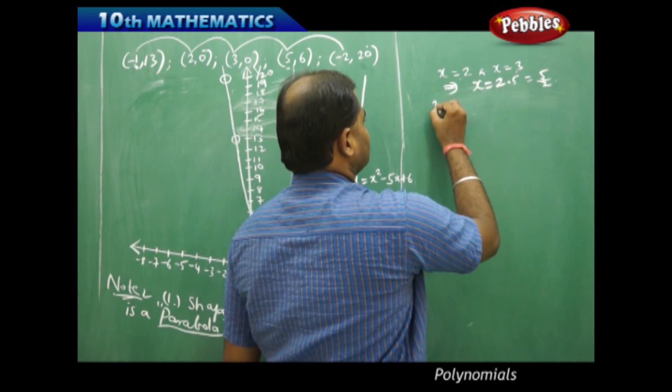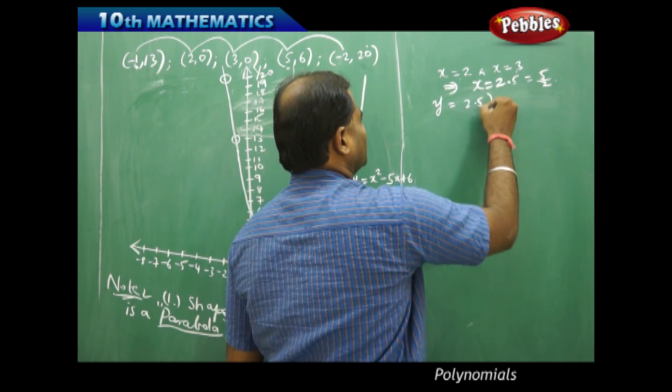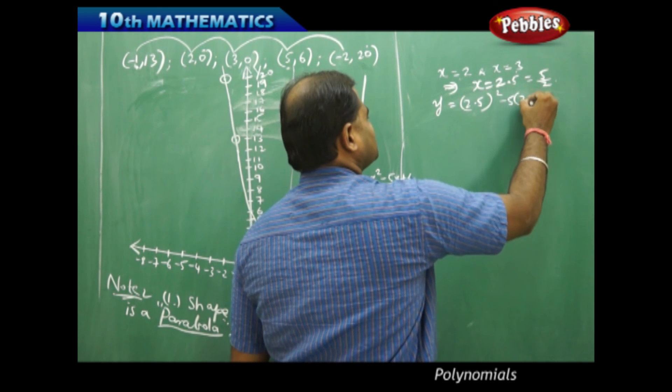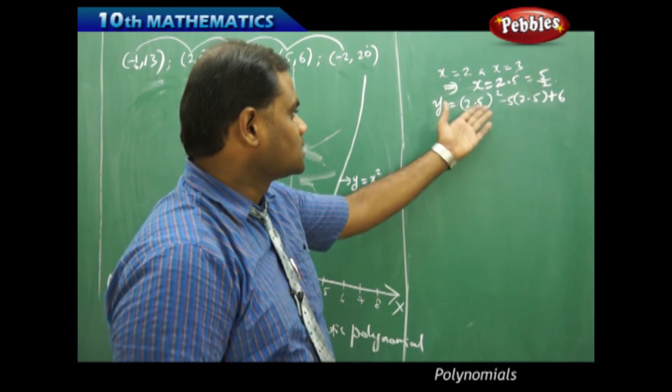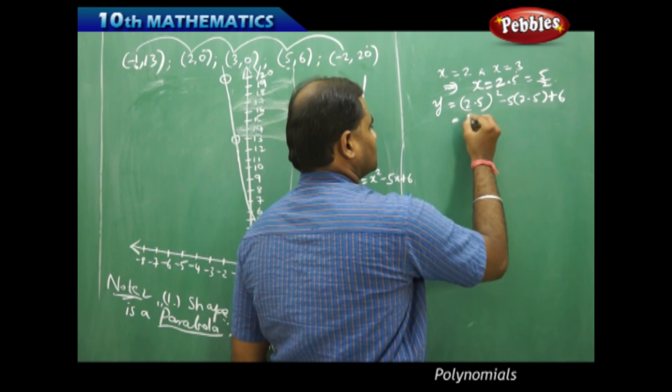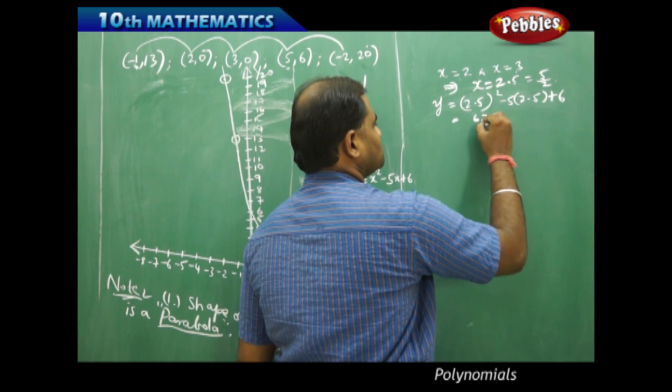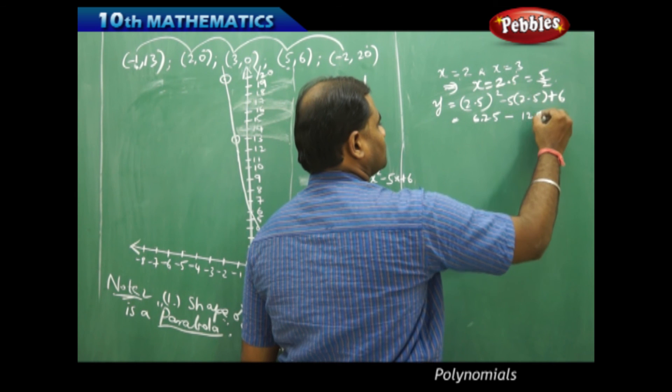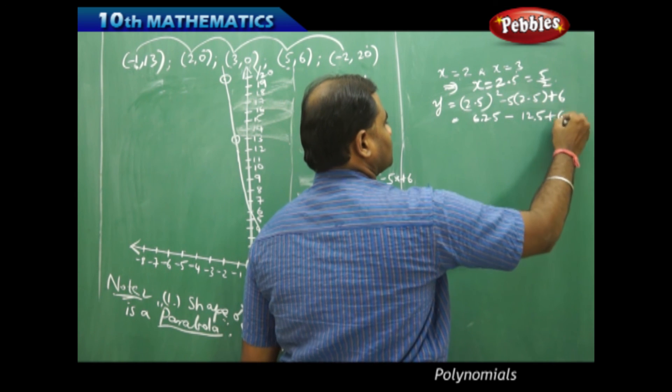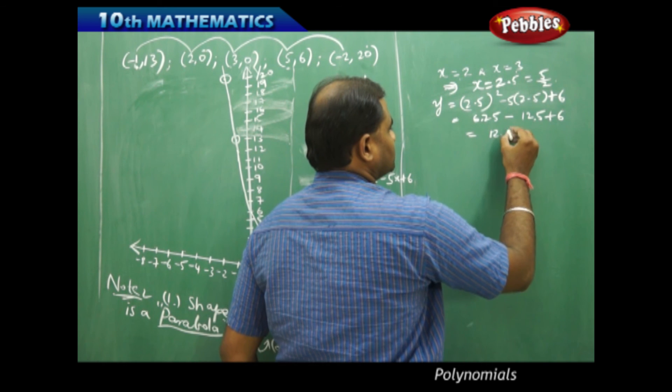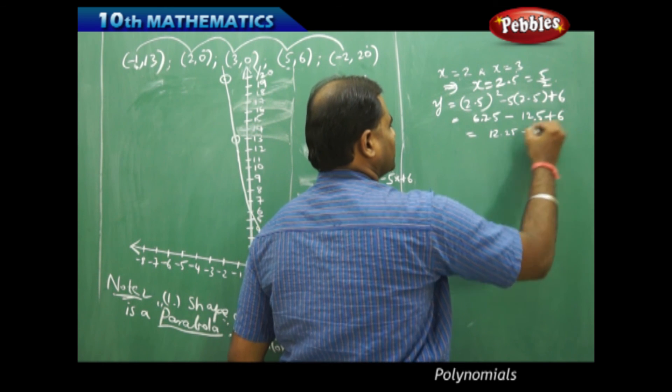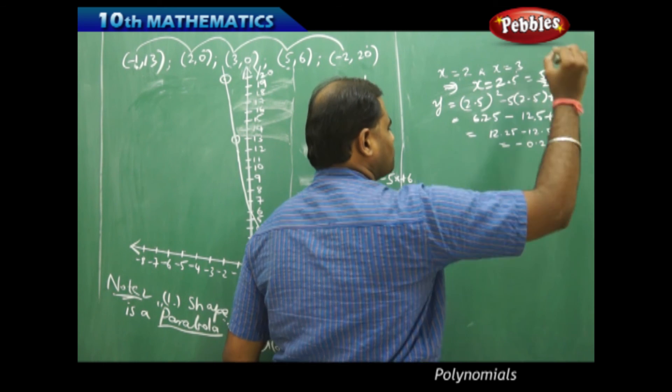So, therefore, with this x, I get my y as x squared minus 5x plus 6 is what I get. And therefore, this turns out to be 6.25 minus 12.5 plus 6. This would be 12.25 minus 12.5 which is negative 0.25.